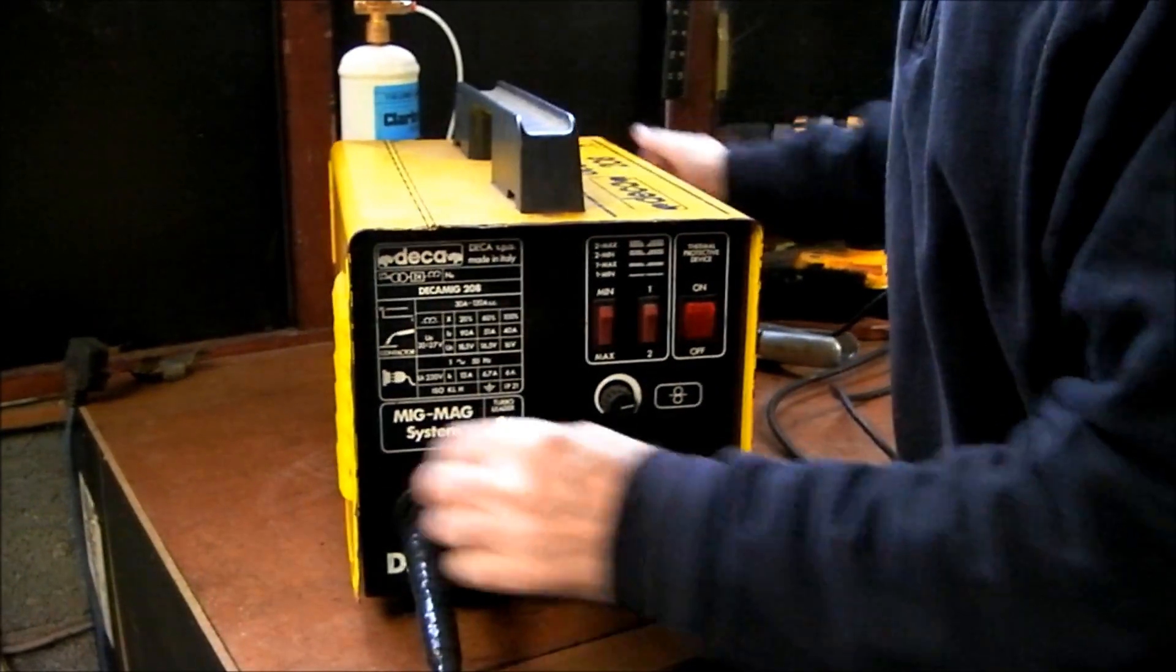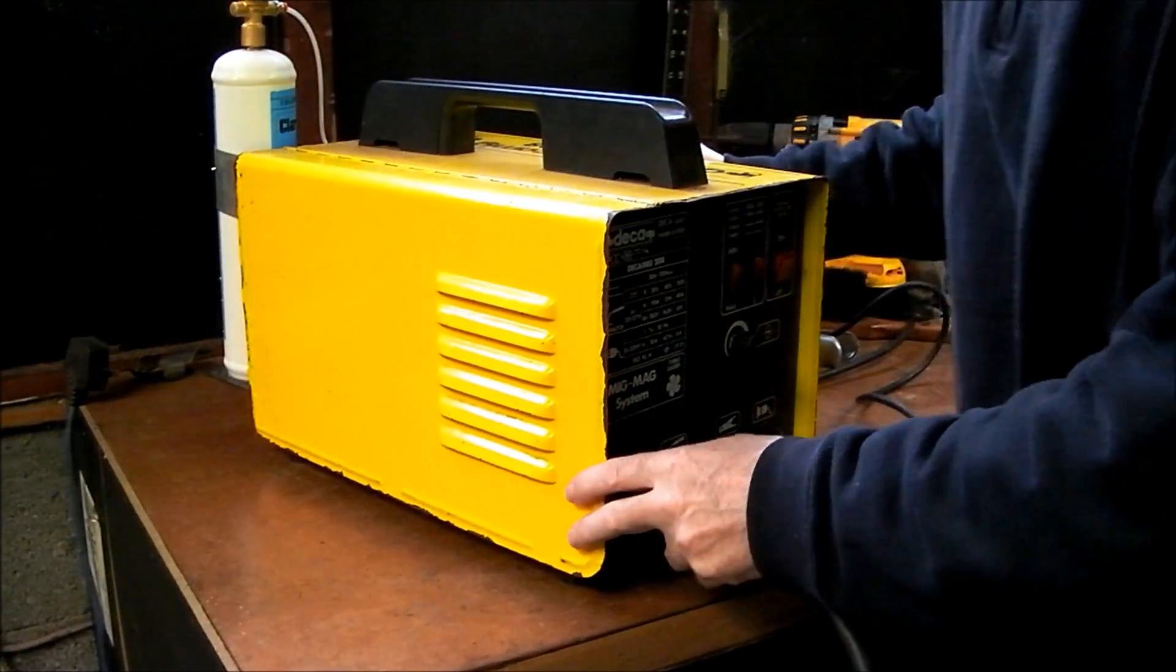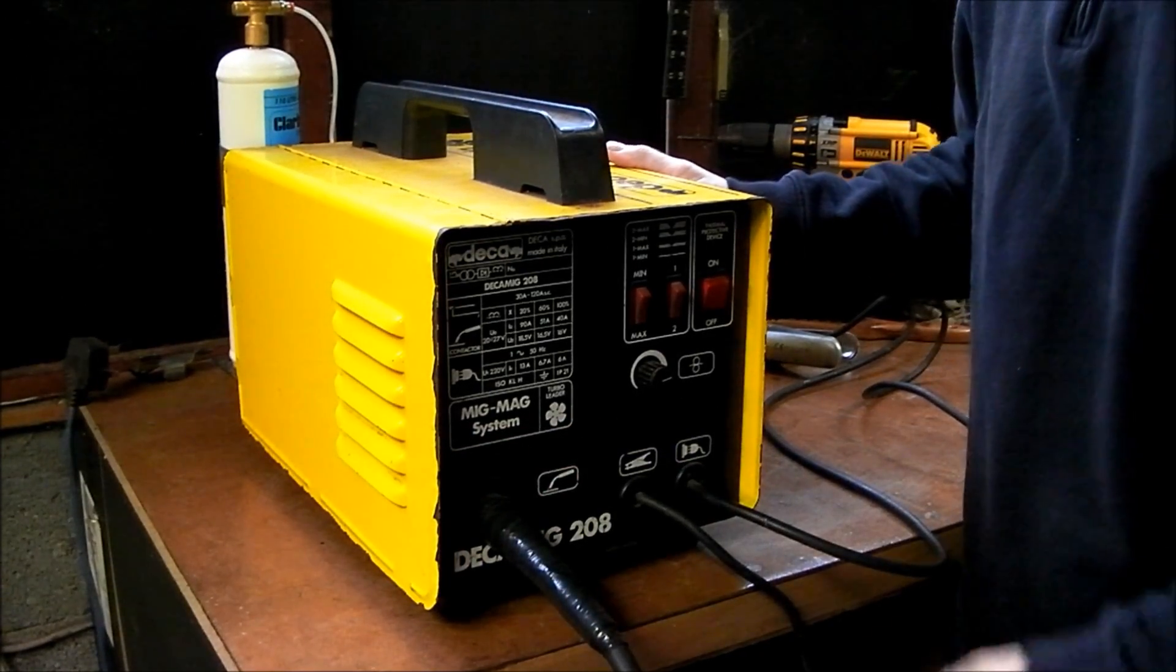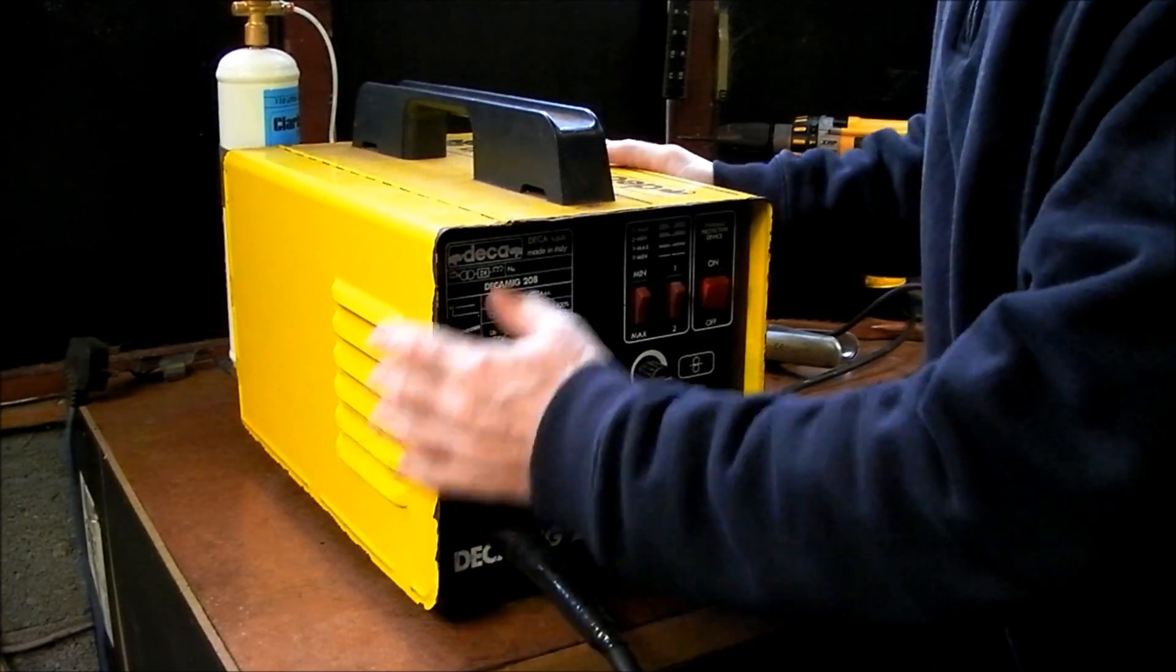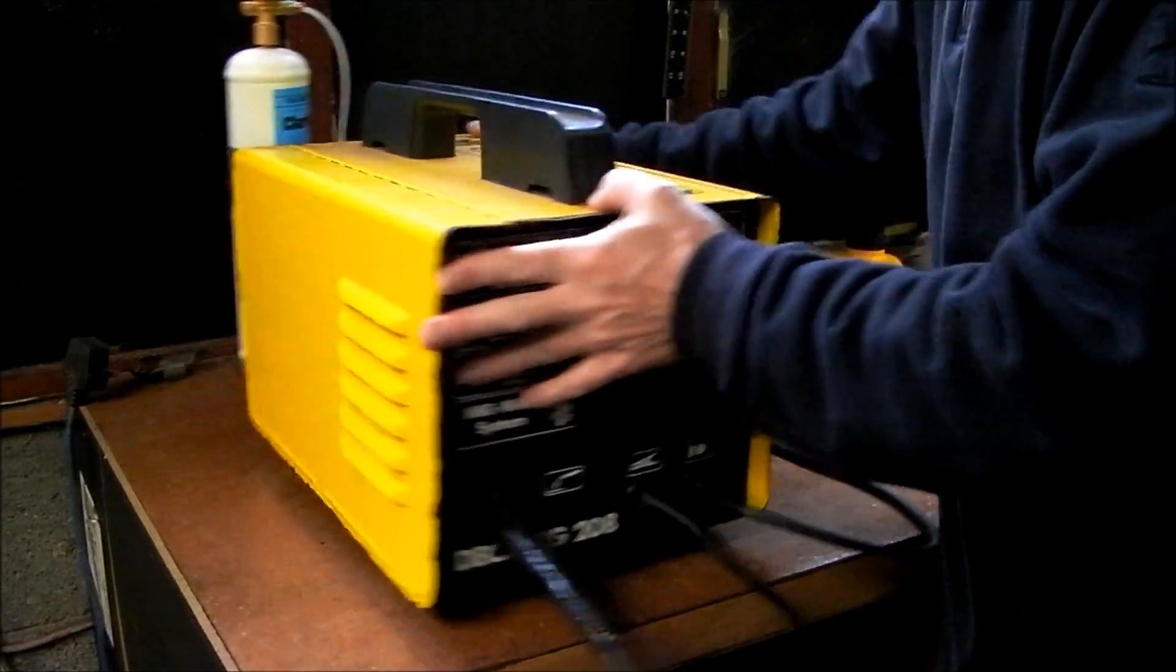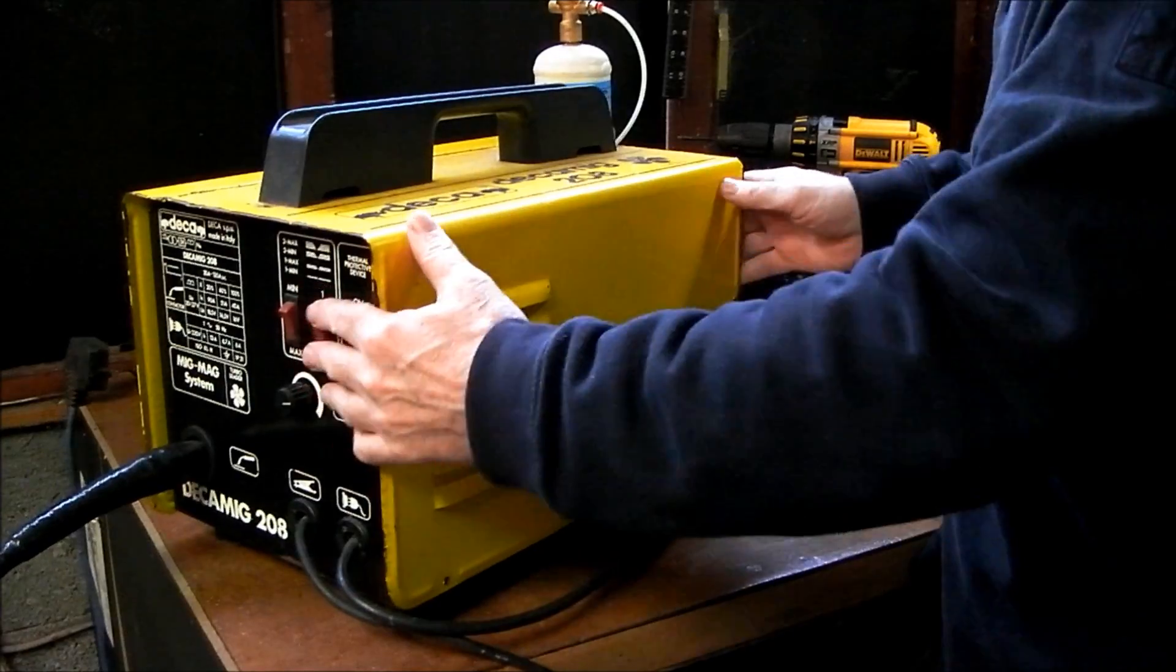This is the MIG here, you've seen it in other videos. It's a fairly simple, basic Decamir with 130 amp. It does all that I need it to do. But as I say, there's no facility for reversing the polarity on it. So I'll take the tin wire off now and I'm going to look inside it. I'll show you what I did.